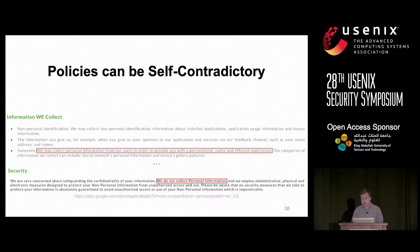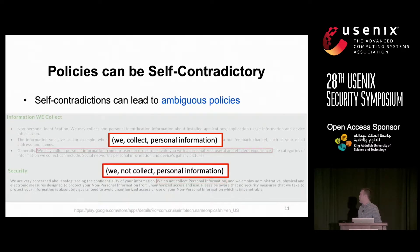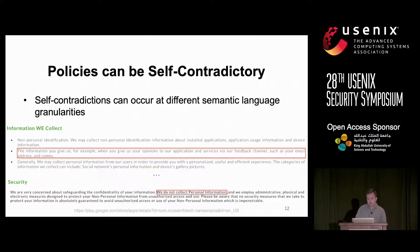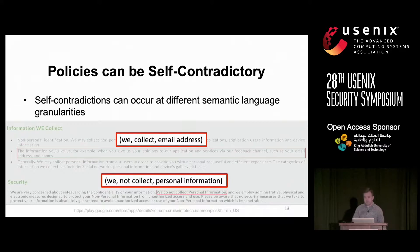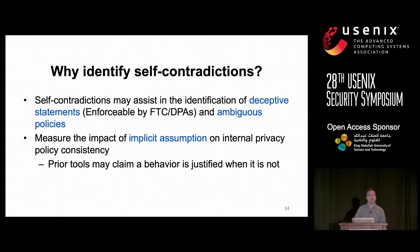If you look at the rest of the policy I showed earlier, it also says 'we do not collect personal information' — so they say they do and they don't collect personal information, which leads to ambiguous policies. Furthermore, these contradictions can occur at different semantic granularities. The policy also states 'we collect email address' — so they state they don't collect personal information, but they do collect email address. Email address is a type of personal information, so it is also contradictory.